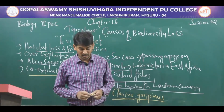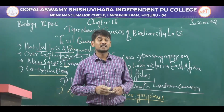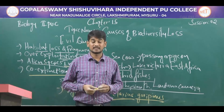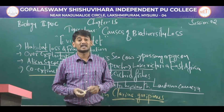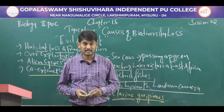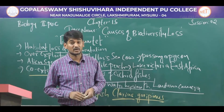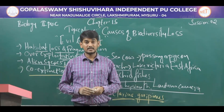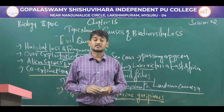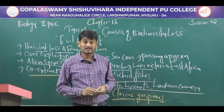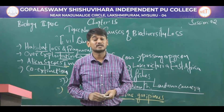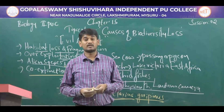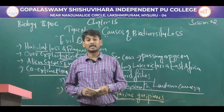The last cause is co-extinction. When one species becomes extinct, the dependent species also becomes extinct. For example, when a host becomes extinct, its parasite will also become extinct. Another example is co-evolved plant-pollinator mutualism — when one species becomes extinct, the depending species also becomes extinct. In this session we discussed the importance of species diversity to the ecosystem, losses of biodiversity, impacts of biodiversity loss, and causes of biodiversity losses.